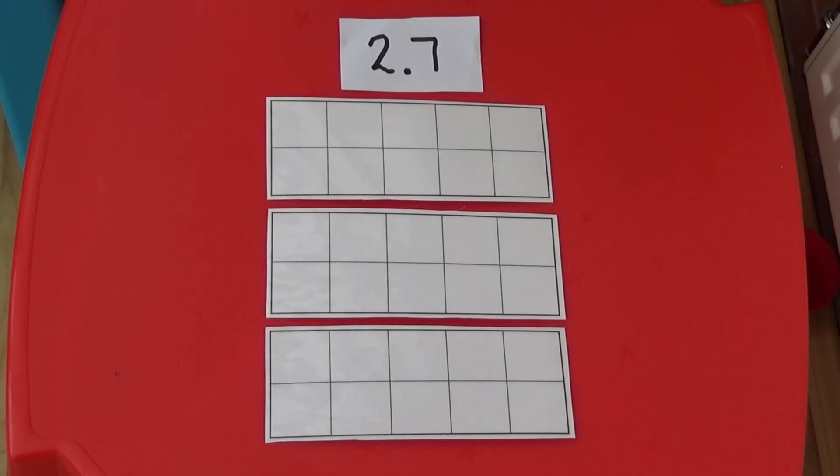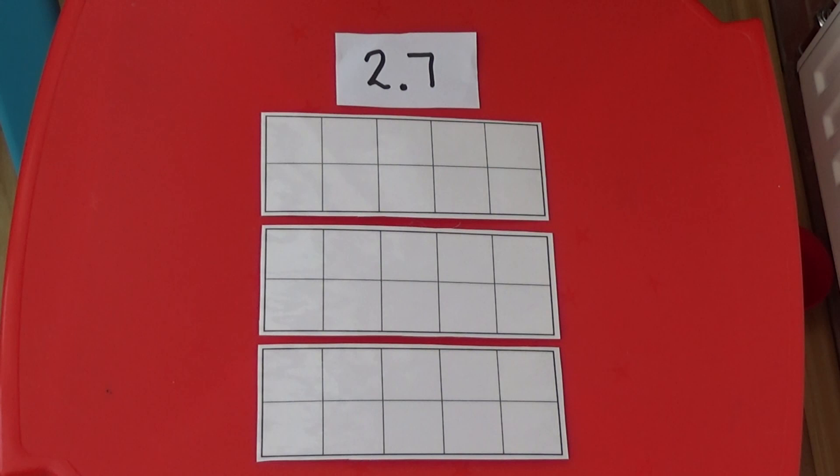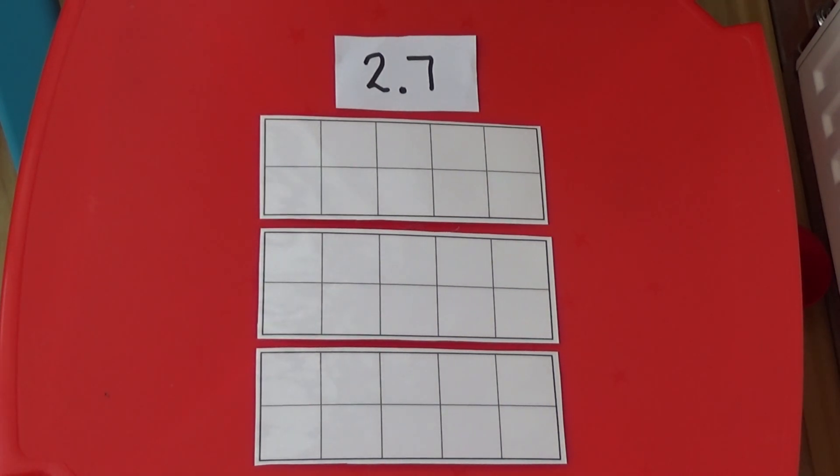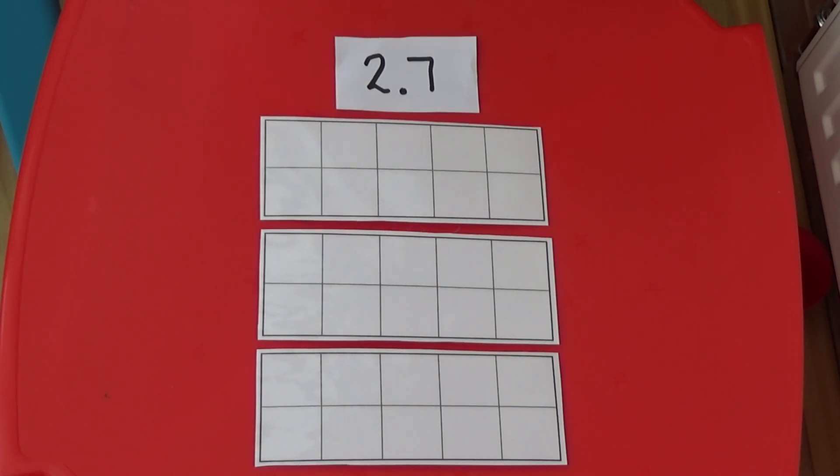We're going to start by using tens frames to represent 2.7. Because we have 2 in the ones column we need 2 whole tens frames, and as we have 7 tenths we need to use a third tens frame. I need to use counters to fill 2 whole tens frames to represent 2, and 7 tenths of the third tens frame to represent 0.7.